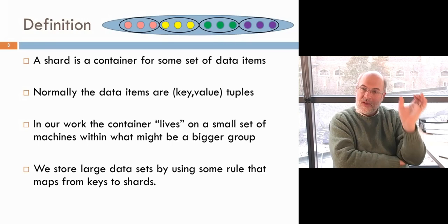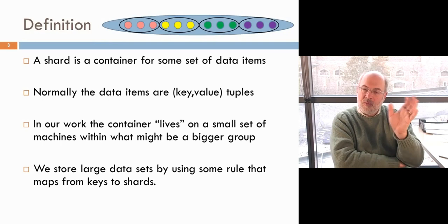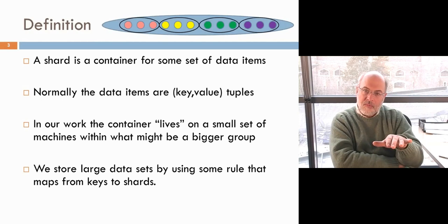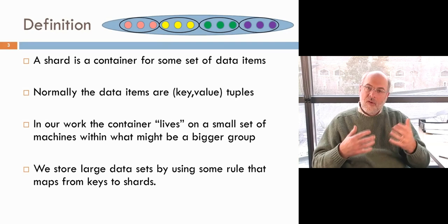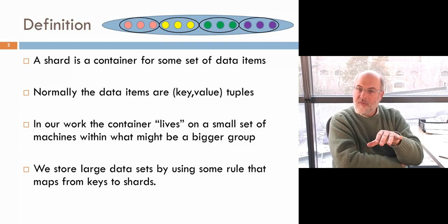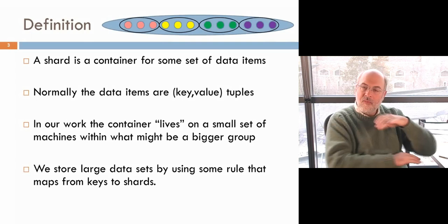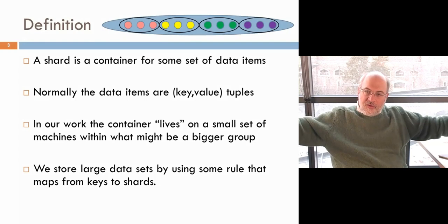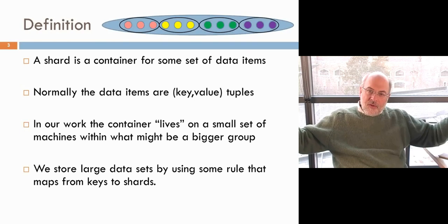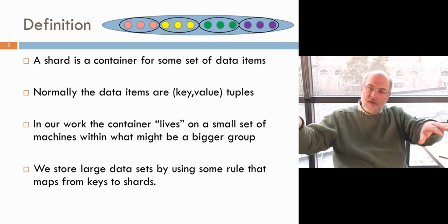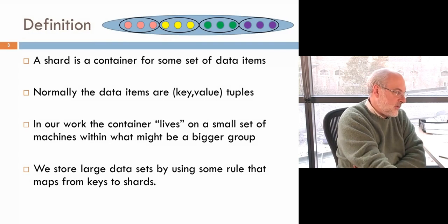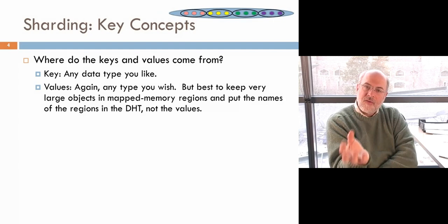A shard is a container for data items understood to have a key and a value, which could be any kind of object you'd like. If we have a hash function on that object type, we can treat it as a key. The value can be any structure or existing type. You can store things as long as you can explain to ISIS how to serialize them — using the marshaller built into ISIS or C-sharp marshalling. We'll then help you spread this distributed hash table out across large numbers of nodes.